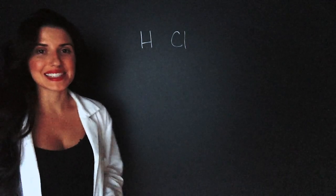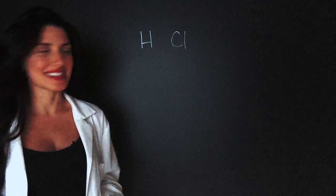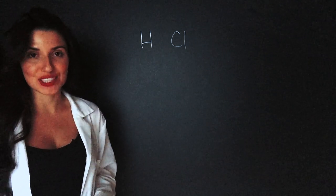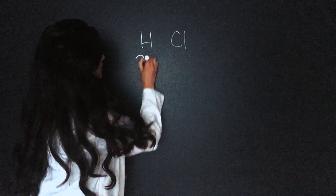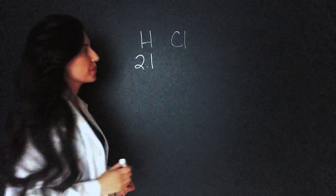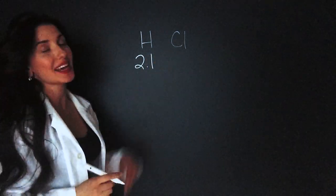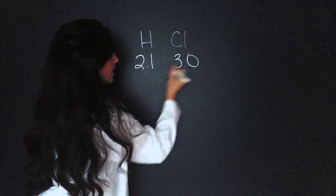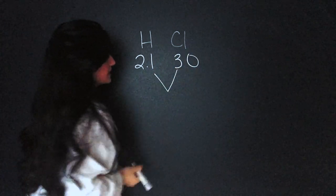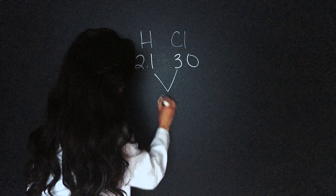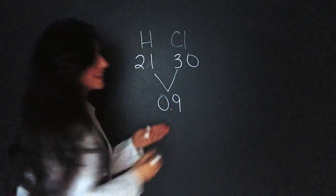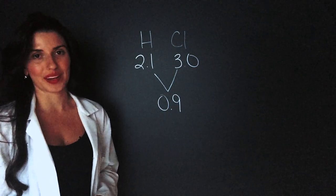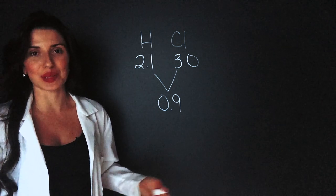My next example is hydrochloric acid, HCl. Hydrogen has an electronegativity of 2.1 and chlorine has an electronegativity of 3.0. The difference between these is 0.9. Since 0.9 is less than 1.9, it's a covalent bond.